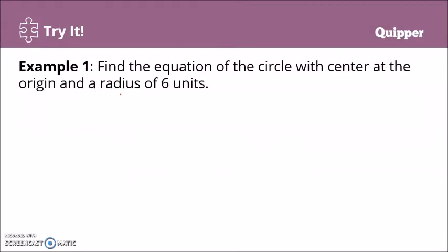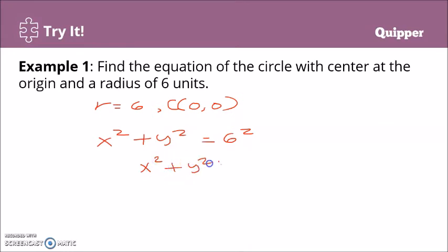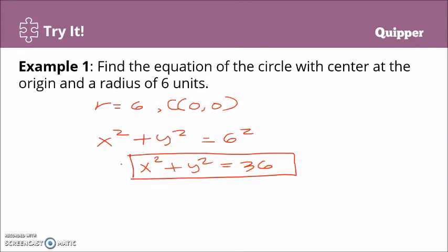Example: Find the equation of the circle with center at the origin and a radius of six. The center is at (0, 0) and r = 6. Using x² + y² = r², we get x² + y² = 6², which gives x² + y² = 36. This is the standard equation of the circle.